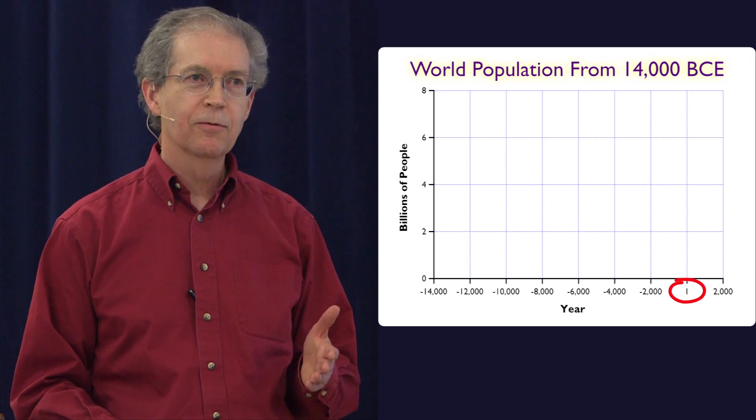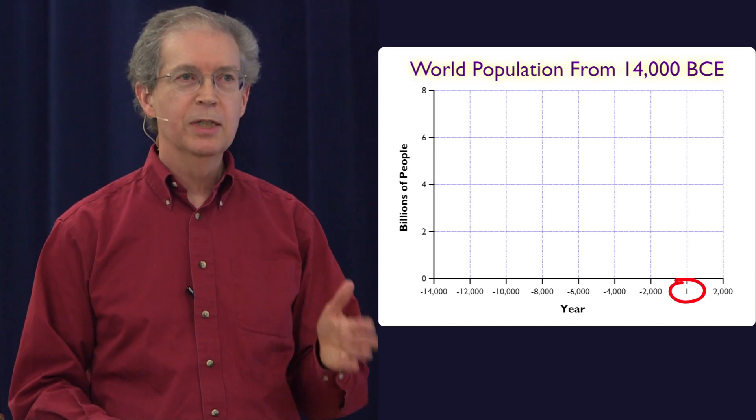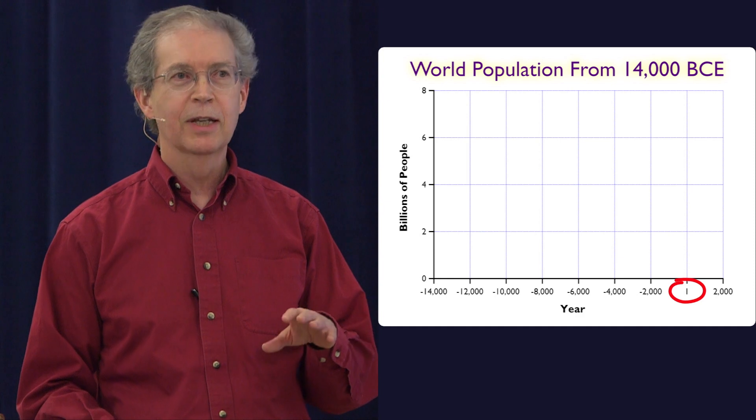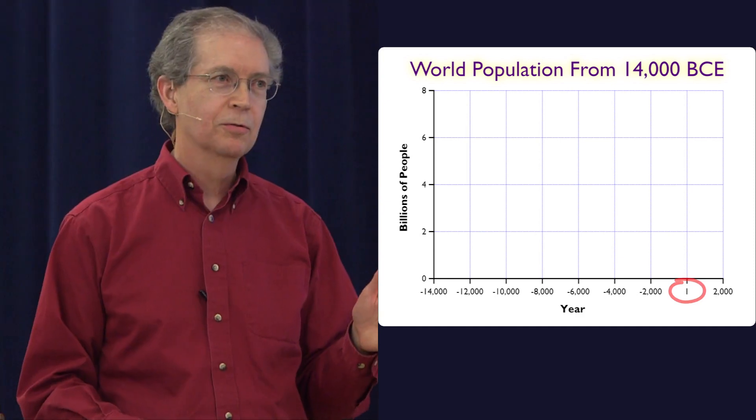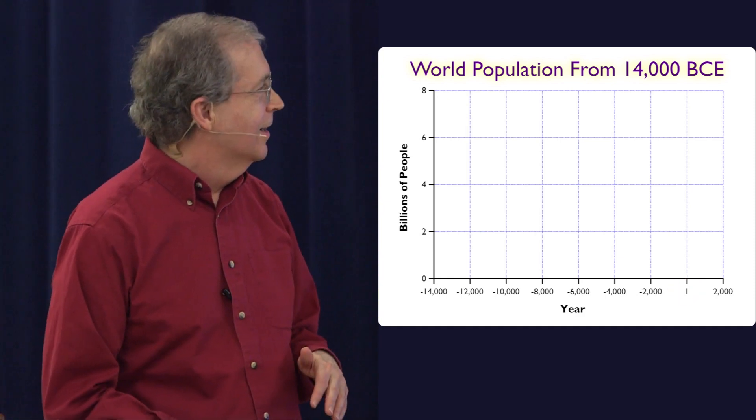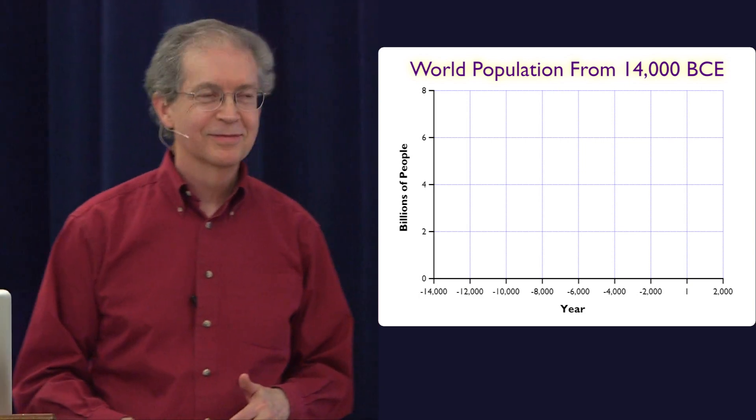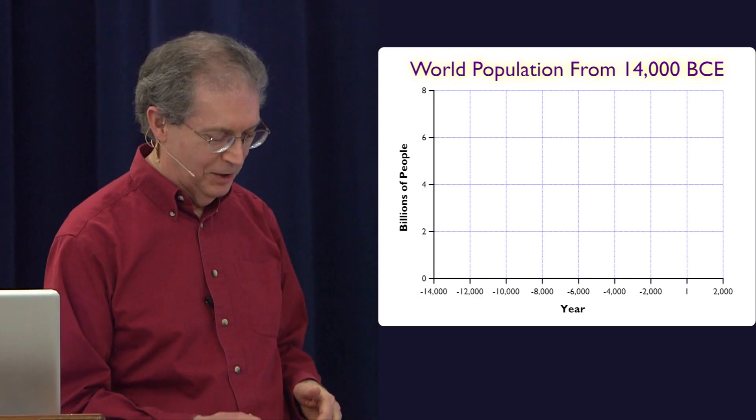And the year is one down there, because historians have year 1 AD and 1 BC, but they don't have year zero, and that messes up astronomers. Anyway, we're not at a level of detail where that's going to matter much.